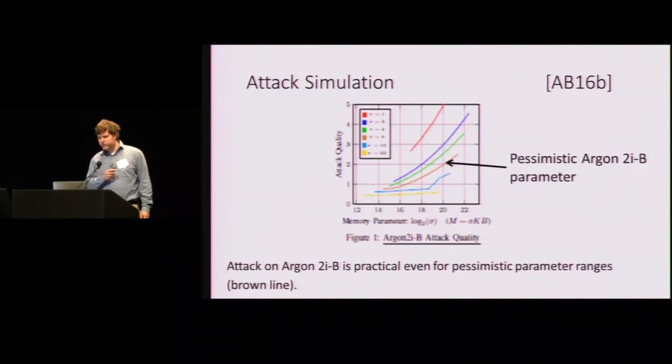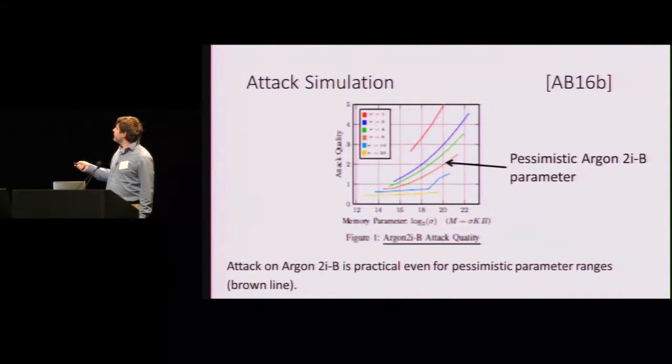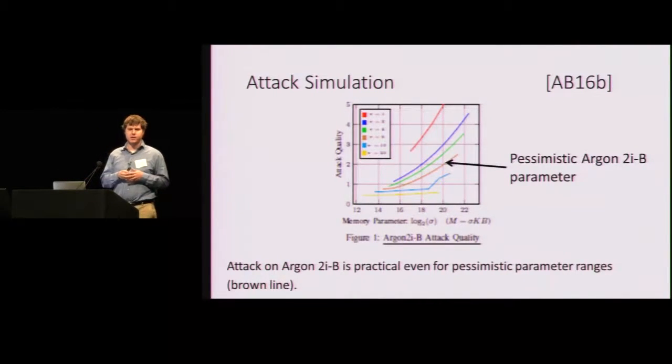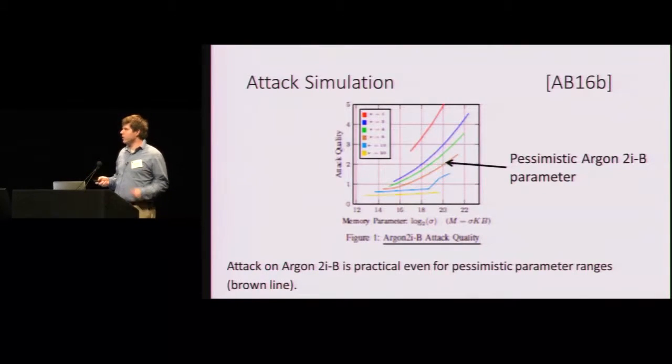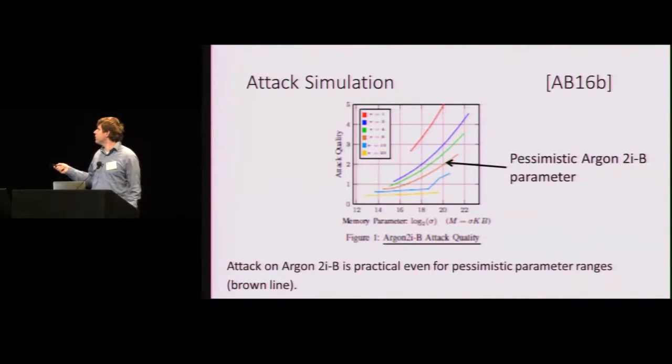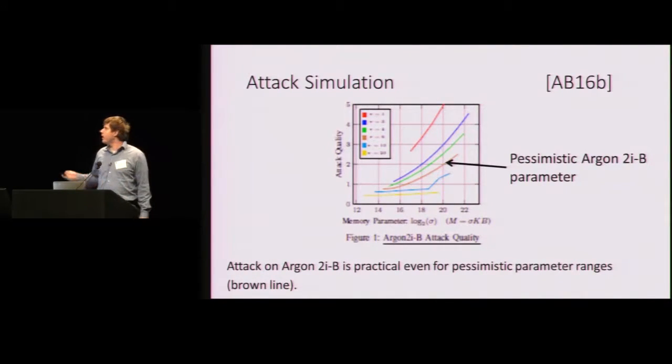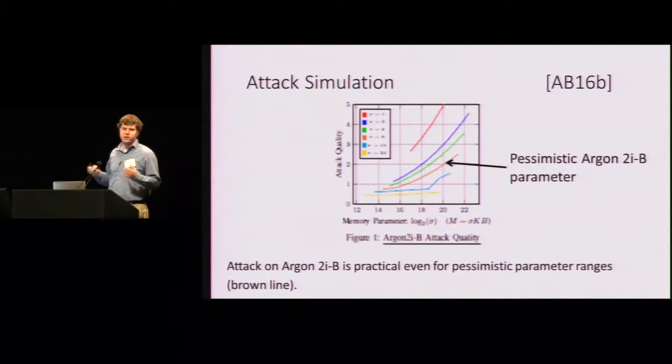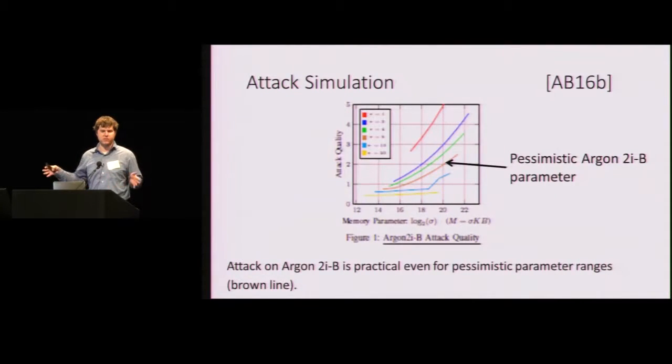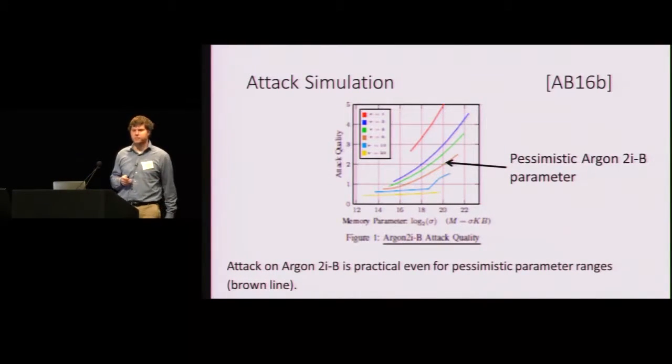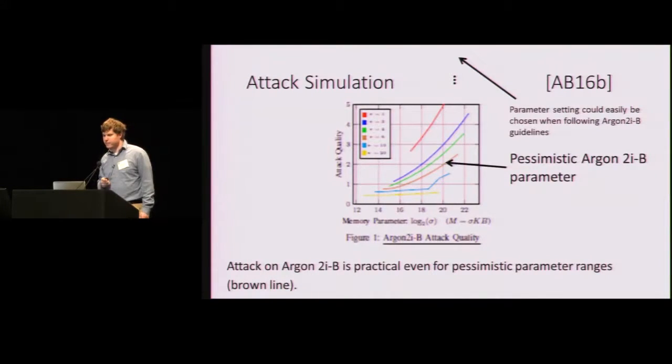All right. So I should also note that even with the pessimistic parameter settings, so if you make six passes through a gigabyte of memory, we still get attacks. So you can still reduce your costs by a factor of two, approximately. Of course, there are good reasons why you might not want to make six passes over memory. In particular, users are impatient, and so you probably don't have time to make six passes over a gigabyte of memory.